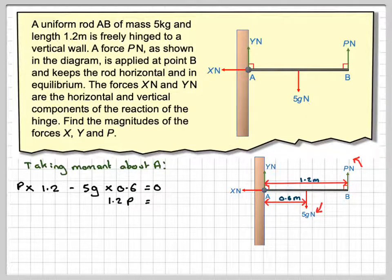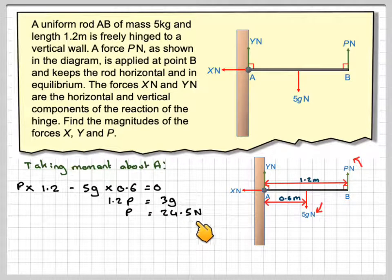So rearranging that, we're going to get 1.2P is equal to 3G, 0.6 times 5. And therefore, P will be equal to 3 times 9.8 divided by 1.2, which gives me 24.5 Newtons.